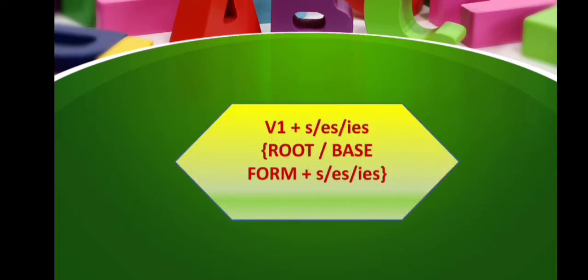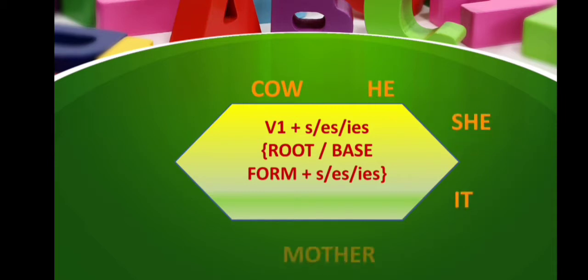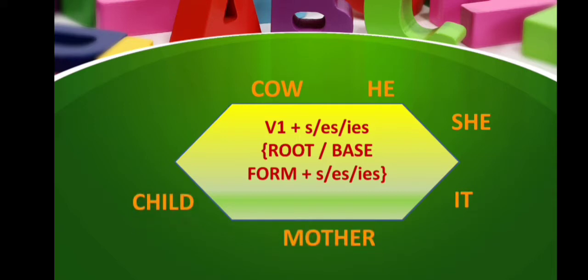For singular subjects, examples are: cow, he, she, it, mother, child. All these examples are singular, so we use the verb's S, ES, or IES form with them.